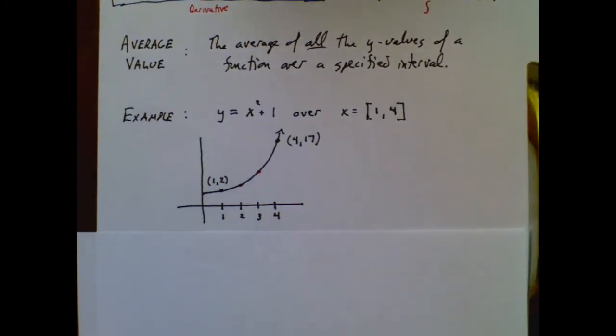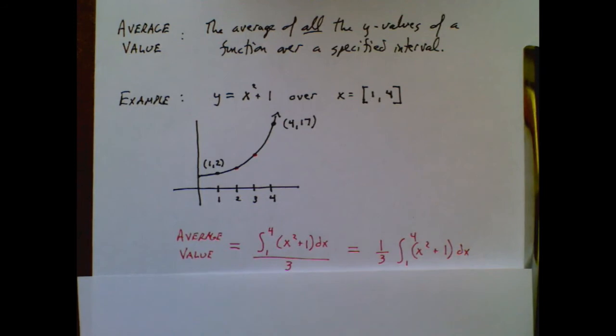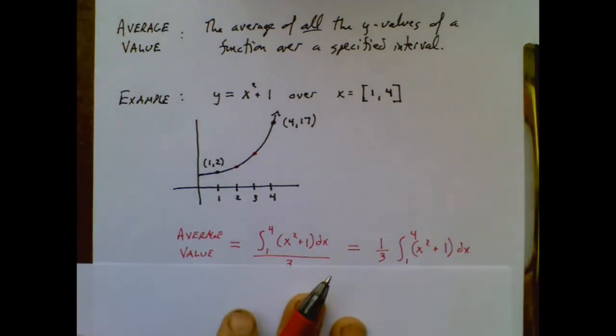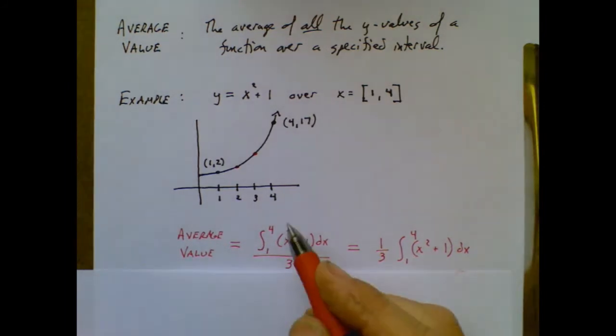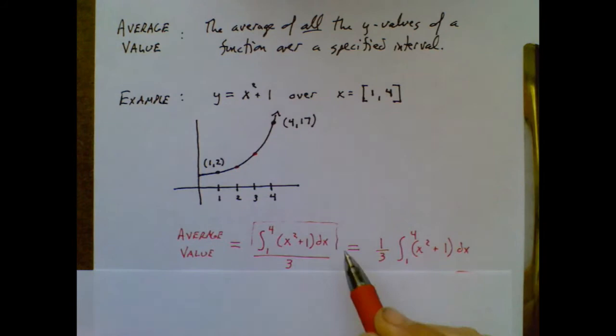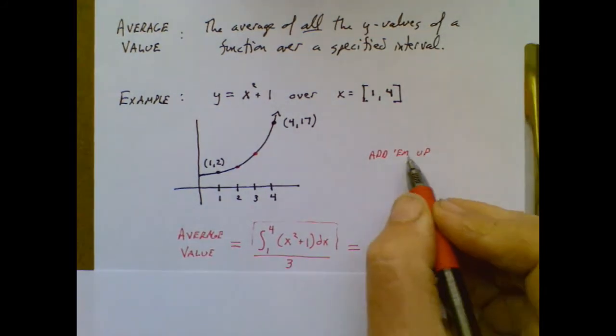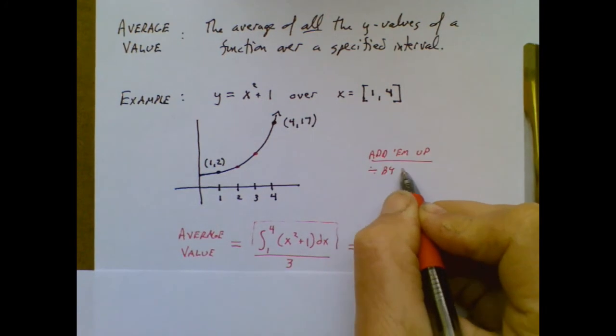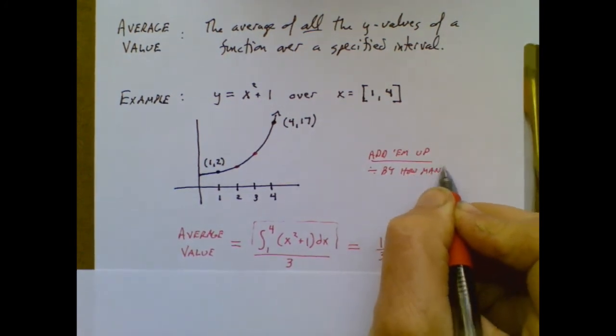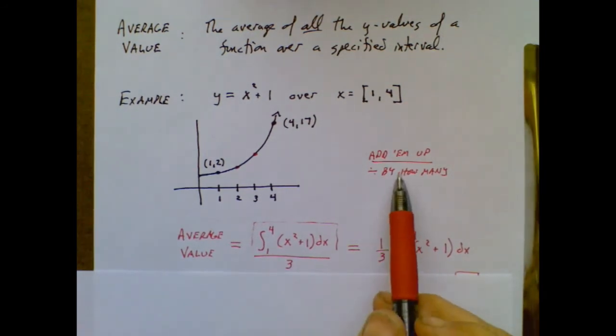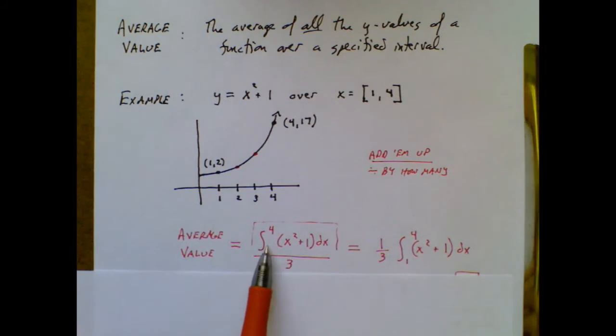So what we're going to do is we're going to use your friend the integral to help you with that problem. And here's what the integral will do for you. The integral is a professional adder-upper. So this part right here, that will add up all the y-values from 1 to 4 because the integral accumulates these y-values. So what we're going to do is we're going to do the add them up. That's the integral. And then we're going to divide by how many? OK, this is how you used to do averages when you were in sixth grade. Well, we just transfer that to calculus. This is the add them up.